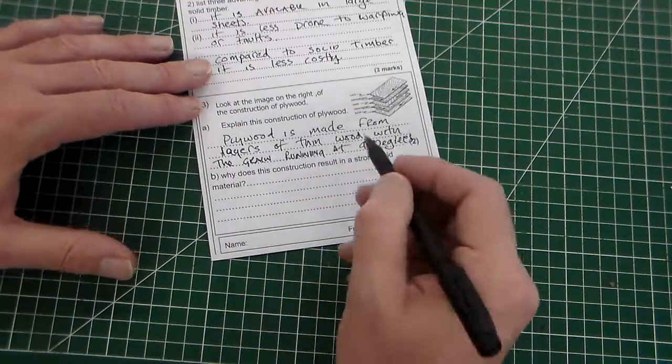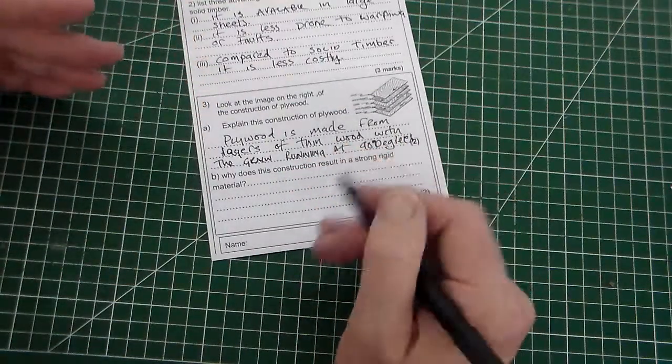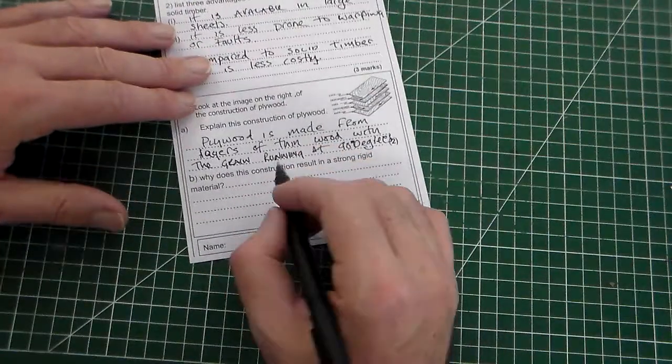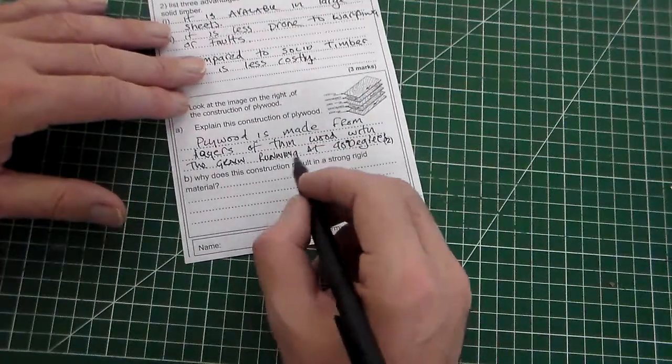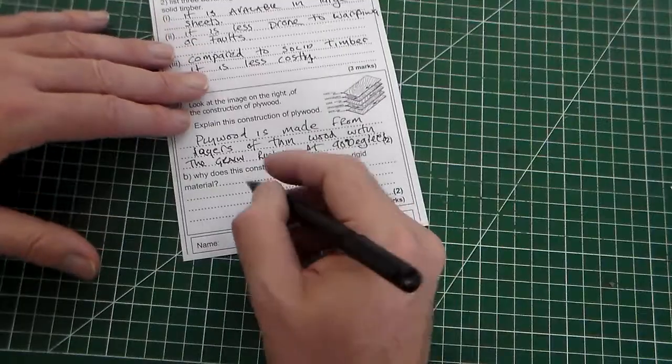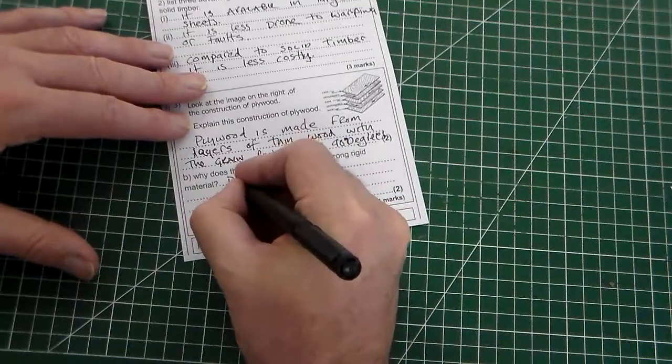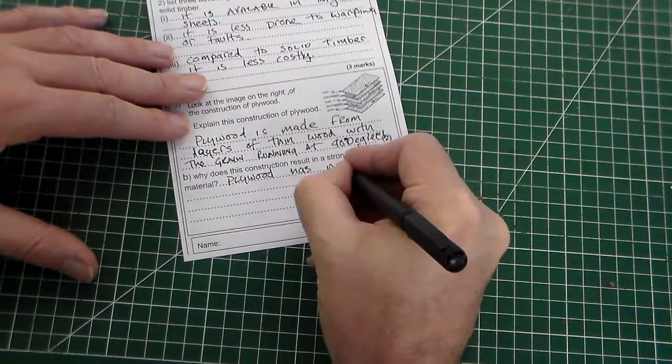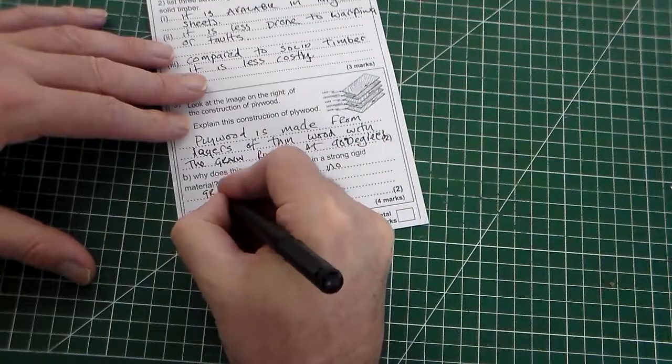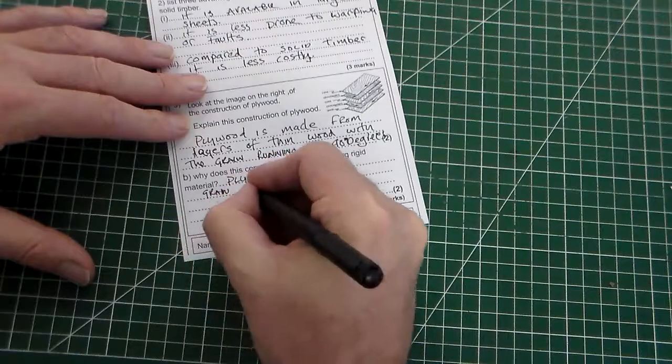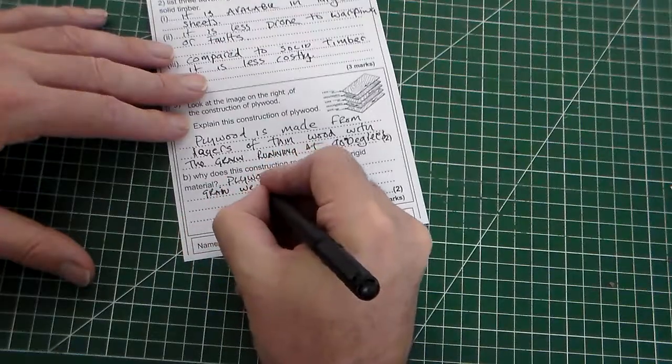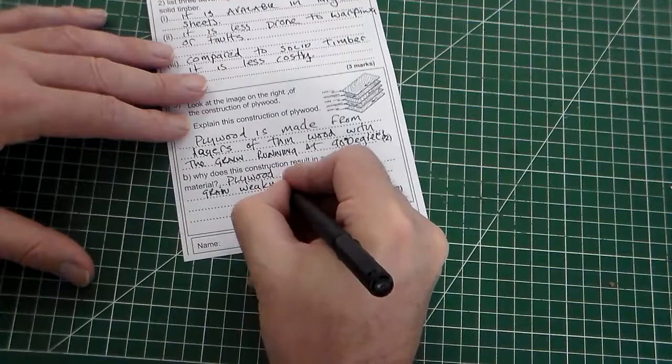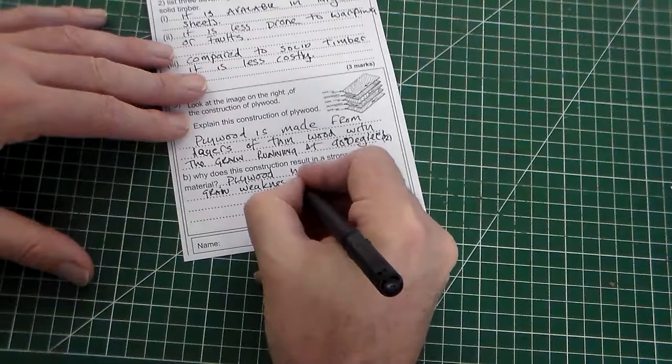But, the plywood is made from layers of thin wood with the grain running at 90 degrees or running opposite at 90 degrees. Why does this construction result in a strong, rigid material? Plywood has no grain weakness, weaknesses.